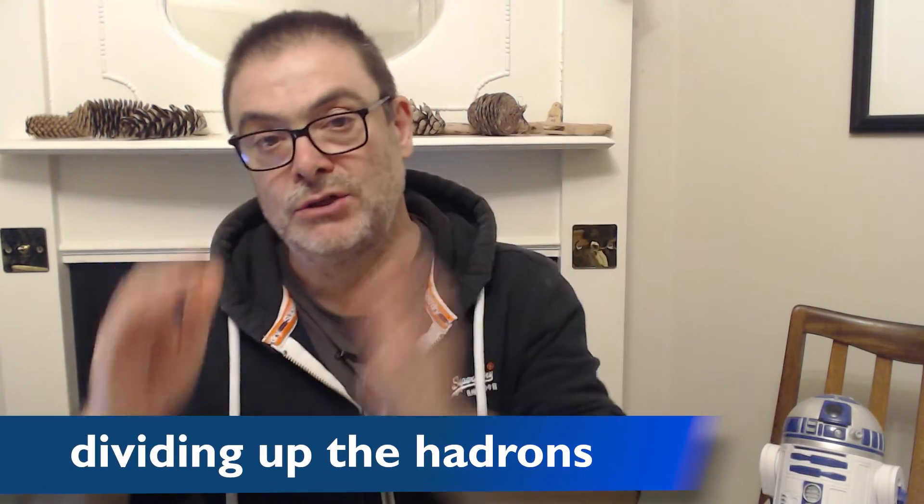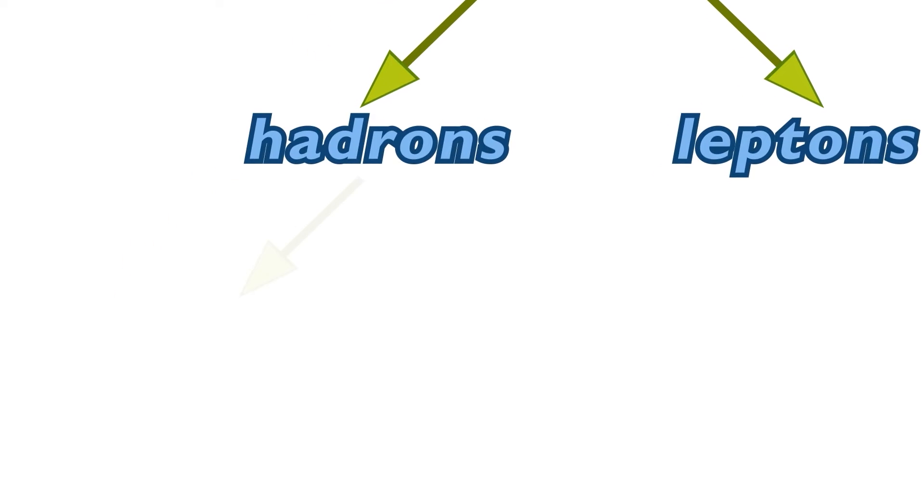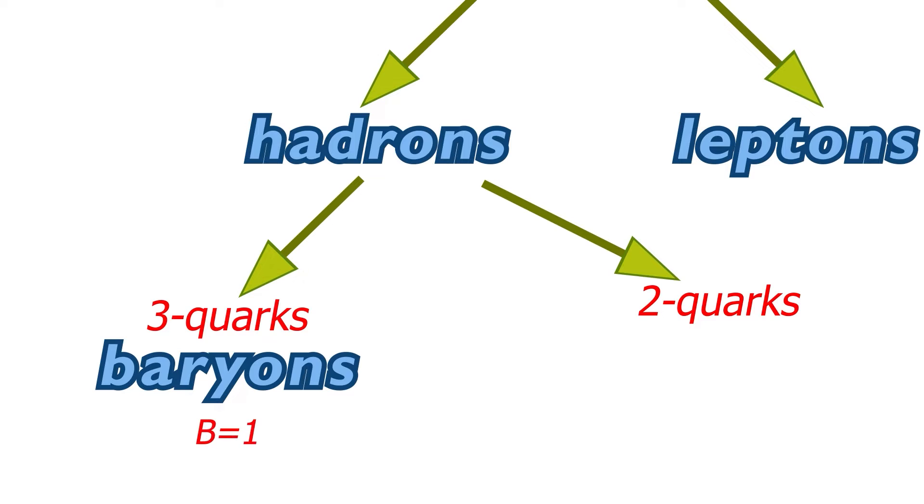Hadrons can be broken down in lots of different ways, but for us the easiest way is to consider the number of quarks that they've got. The branch with three quarks are known as baryons and given the number B equals one, or minus one if it's an anti-particle. These are more or less the particles you're familiar with - the proton, the neutron, and their anti-particles, but also others like the sigma and the lambda.